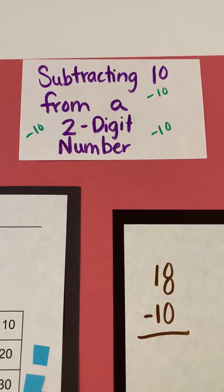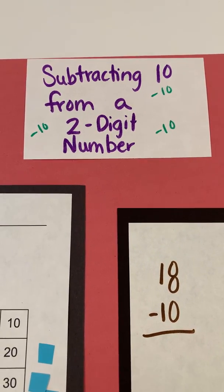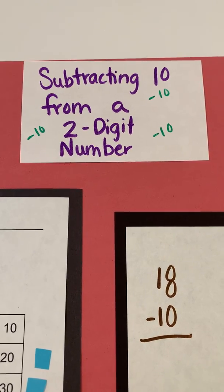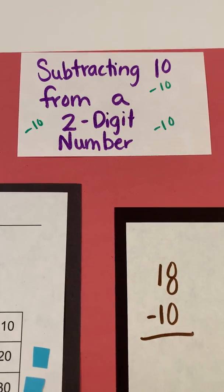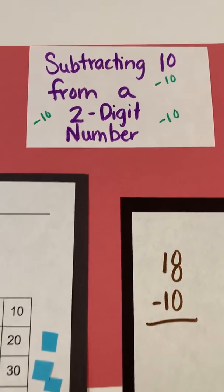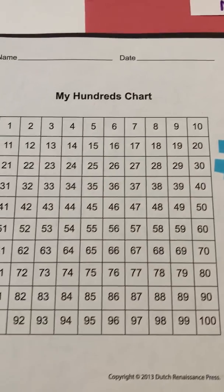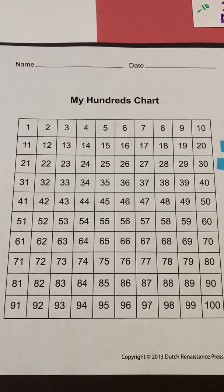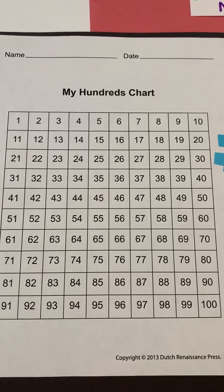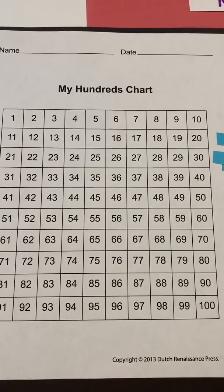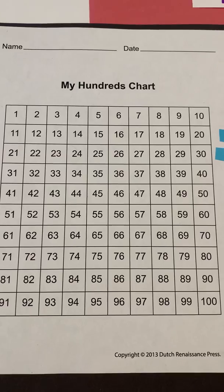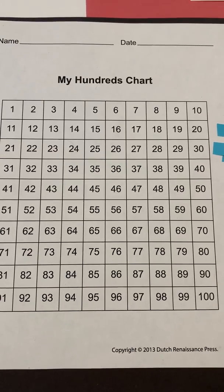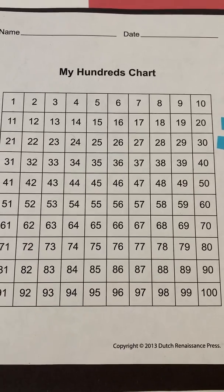Today we're going to continue that, but we're going to use a hundreds chart. So we're still going to subtract 10 from a two-digit number, but today we're going to use a hundreds chart. Now you've used a hundreds chart before when we've added 10 and multiples of 10, but when we subtract, we only subtract 10 in first grade.